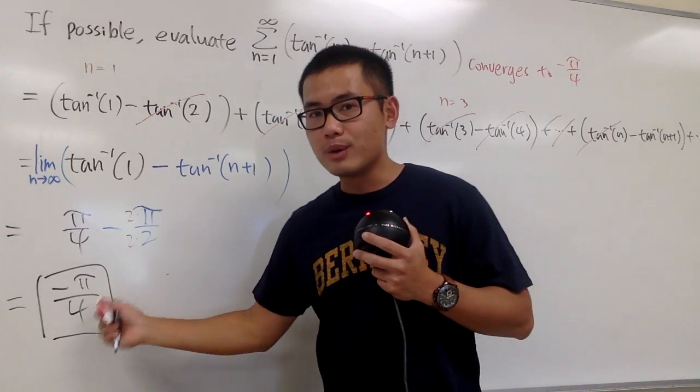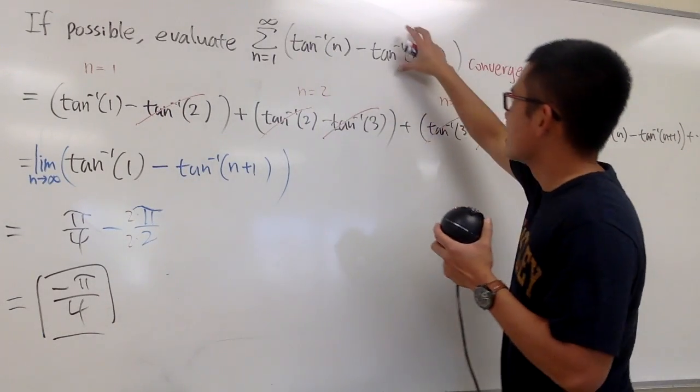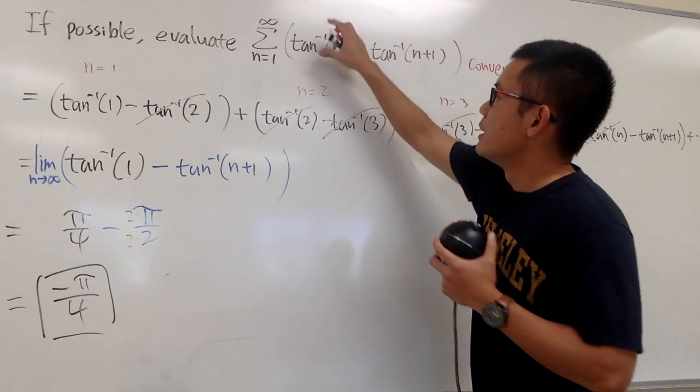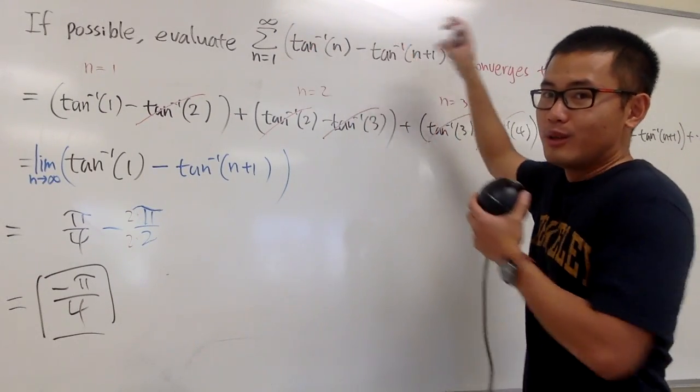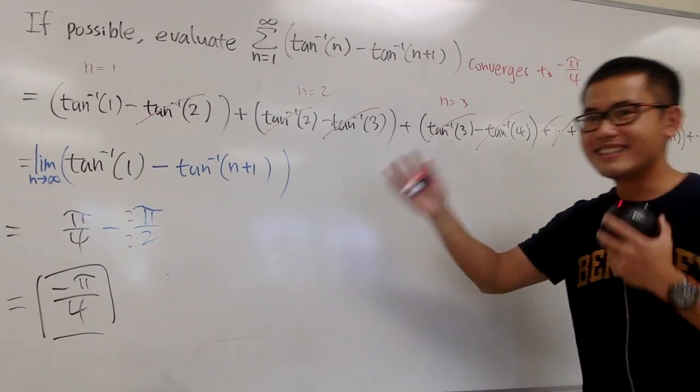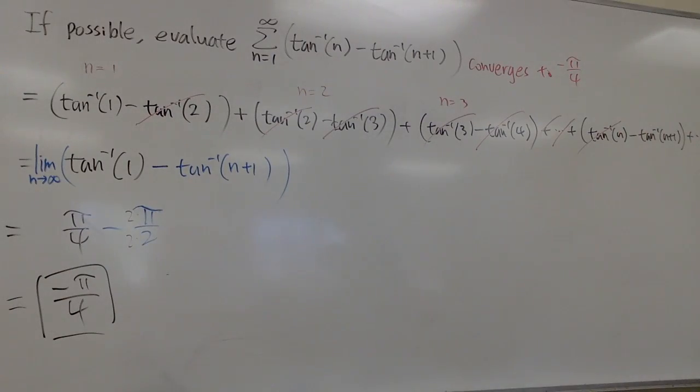It is possible to end up with a negative value, because in fact this term is bigger than the previous term. So you just keep adding negative values along the way infinitely many times. That's the answer. That's it. Telescoping sum again.